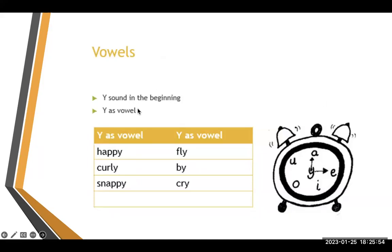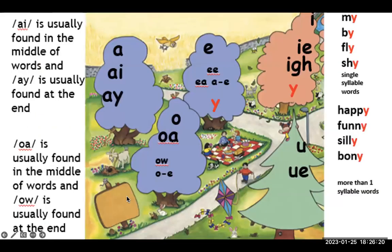Regarding 'y' as a vowel sound: when 'y' is at the beginning of a word, it gives a 'yuh' sound. When at the end, it gives either an 'ee' sound or an 'eye' sound — in a one-syllable word it gives the 'eye' sound (e.g., lie, buy, cry), and in a two-syllable word it gives the 'ee' sound (e.g., happy, curly, snappy).